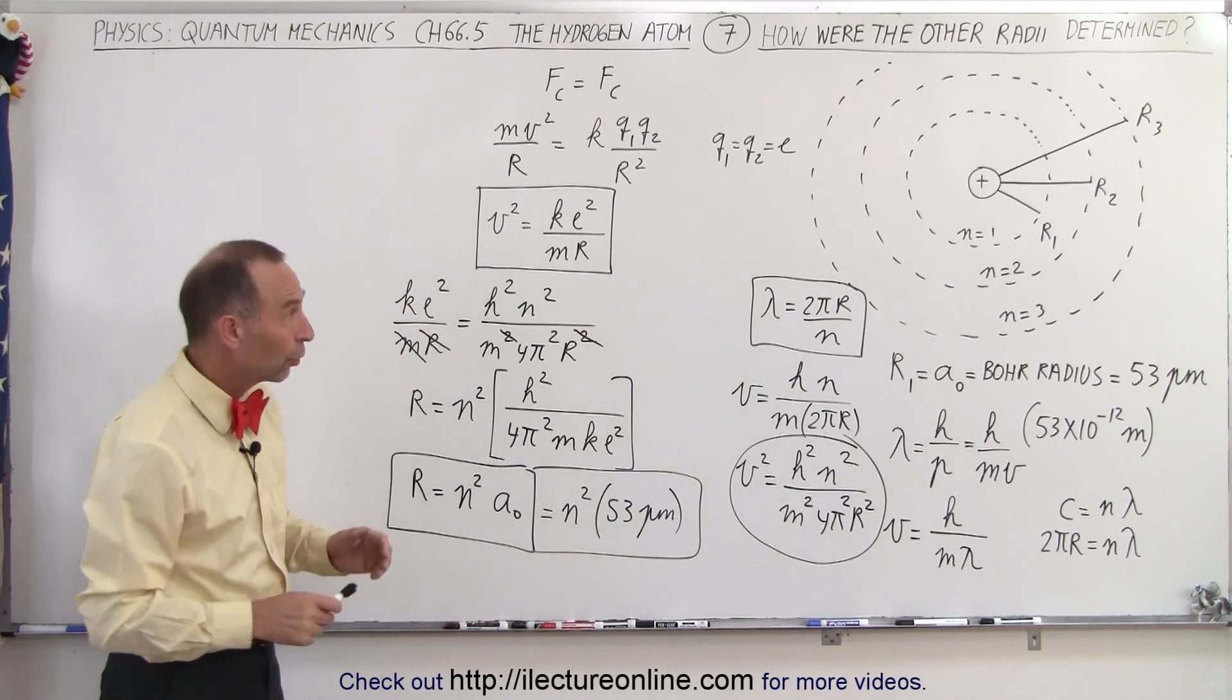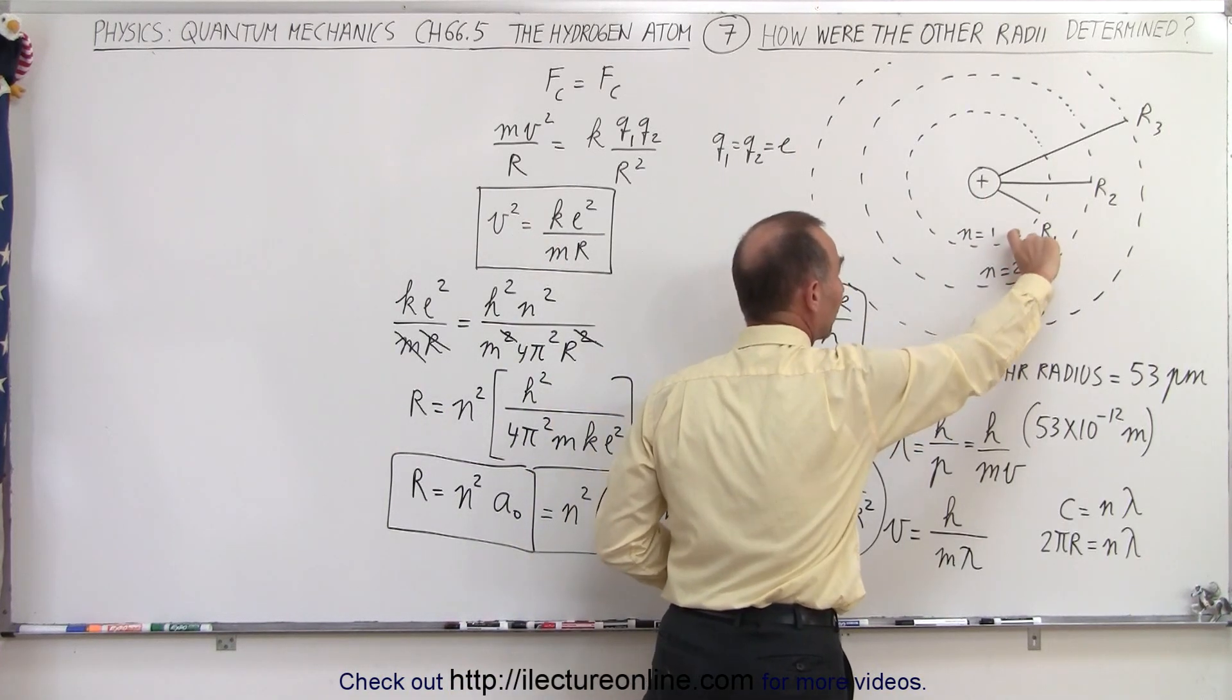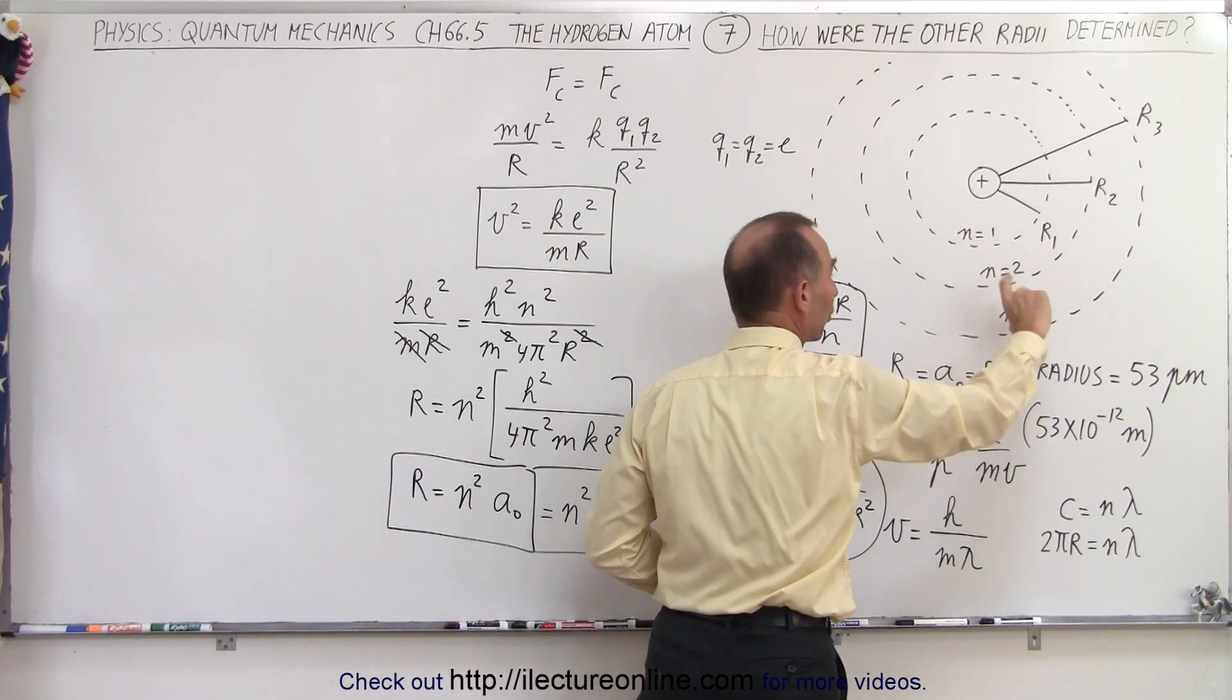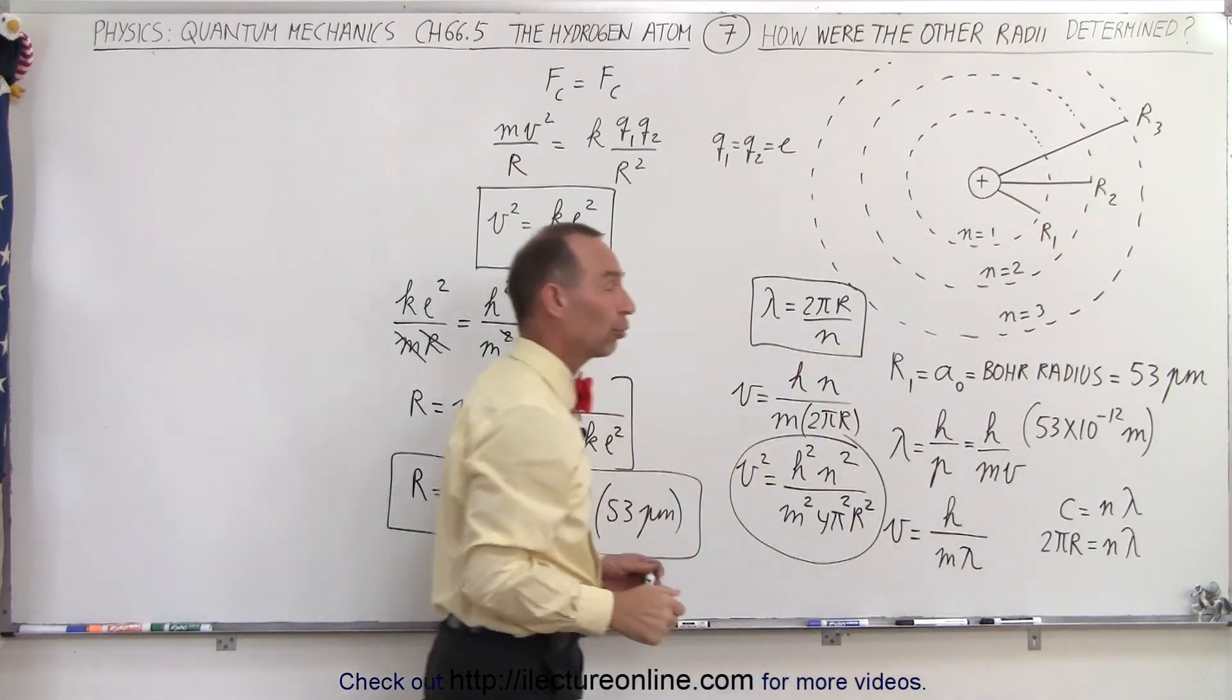Which means that to go to the second orbit, the radius of the second orbit is going to be 4 times the radius of the first orbit, the radius of the third orbit is going to be 9 times the radius of the first orbit, and so forth.